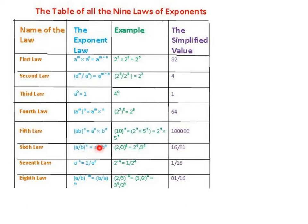The same applies to division: if you have two items being divided in parentheses and it's being raised to a power, you can distribute that exponent to each part. If you have a negative exponent in the top of a fraction, you remove it by moving that whole base and exponent to the bottom of the fraction. You can also do that vice versa. If you have a fraction raised to a negative exponent, you flip the fraction and keep the exponent to make it positive.